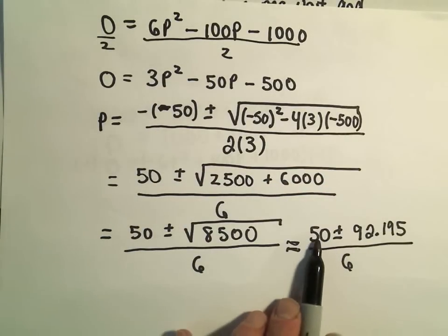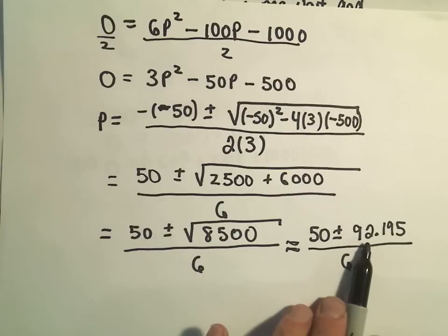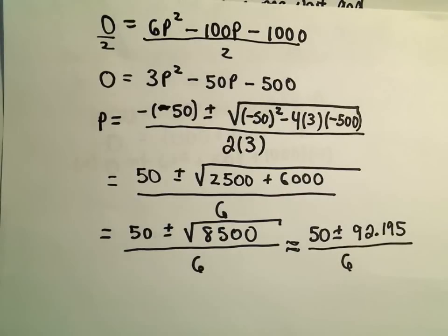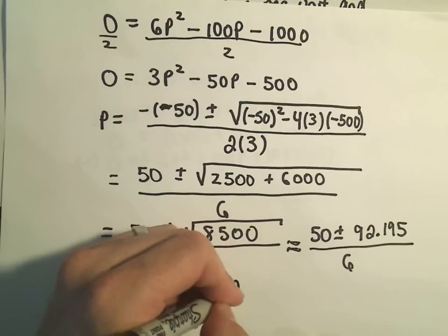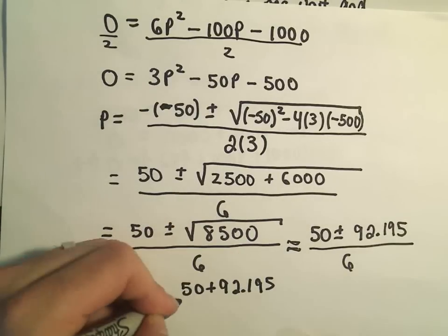So notice if we take the 50 minus 92.195, we would get a negative number. And the price should be something positive. So we're just going to use the 50 plus 92.195 over 6.